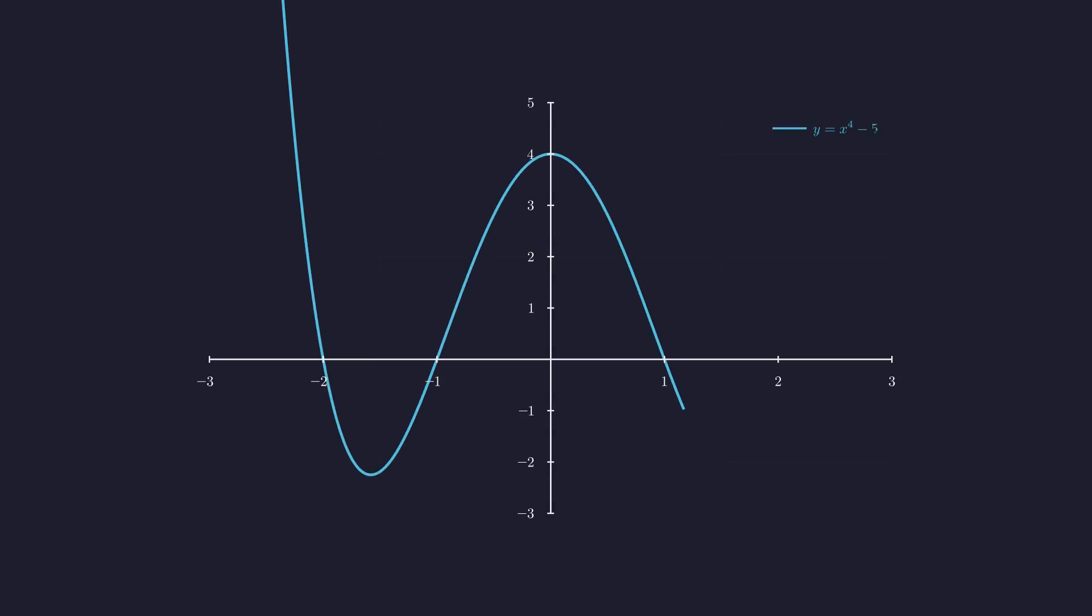We've got our four solutions algebraically. Let's see what this looks like on a graph. Let's plot y equals x to the fourth minus 5x squared plus 4. The solutions are where this curve crosses the x-axis. Notice the characteristic double valley shape. And there they are - the x-intercepts at negative 2, negative 1, 1, and 2. The graph confirms exactly what we found algebraically.